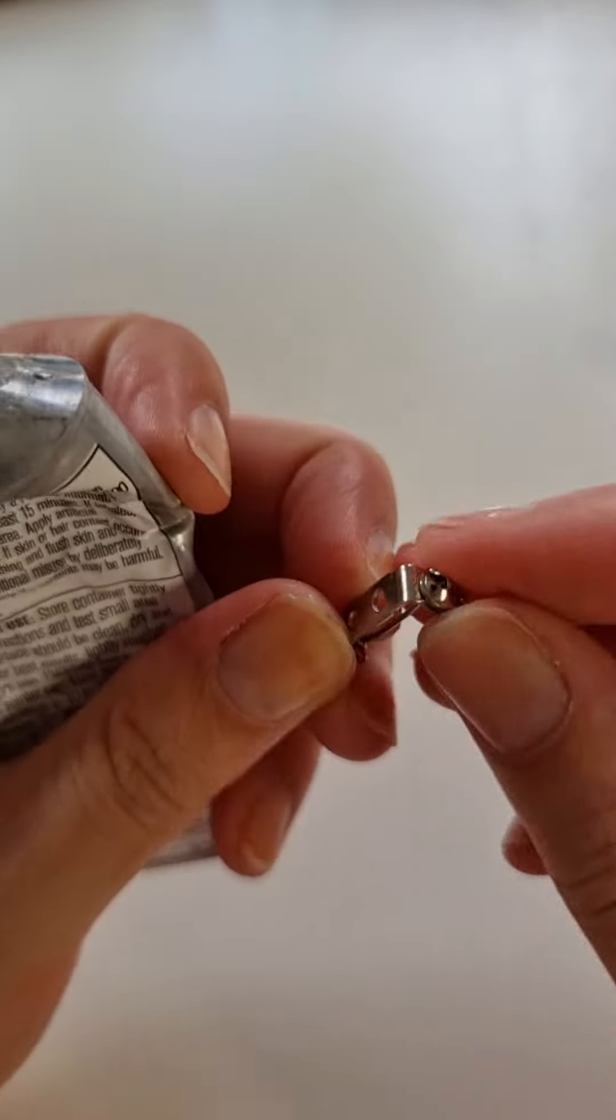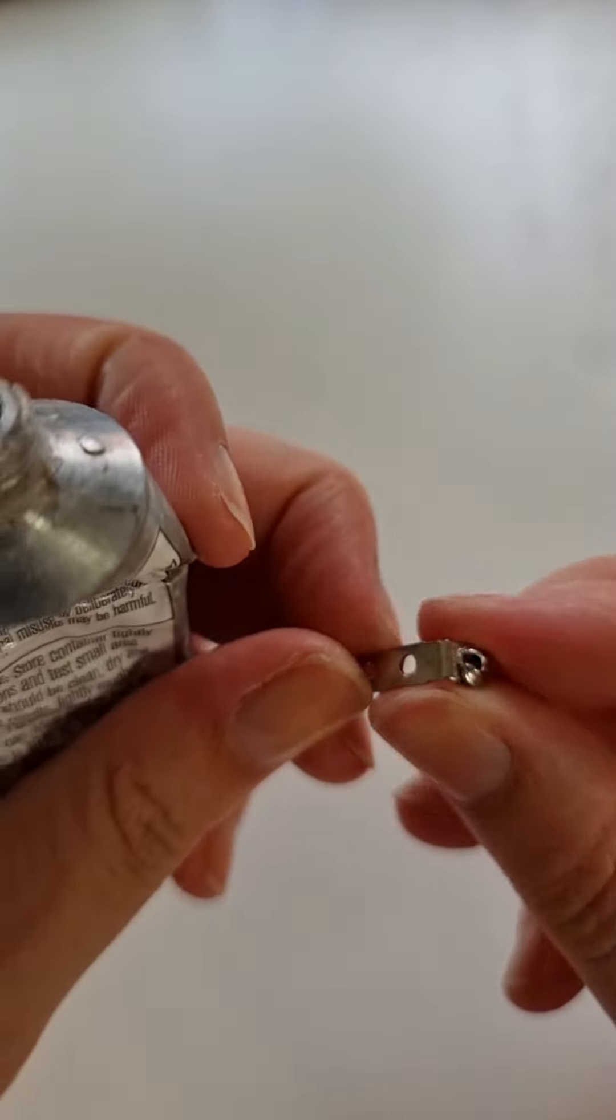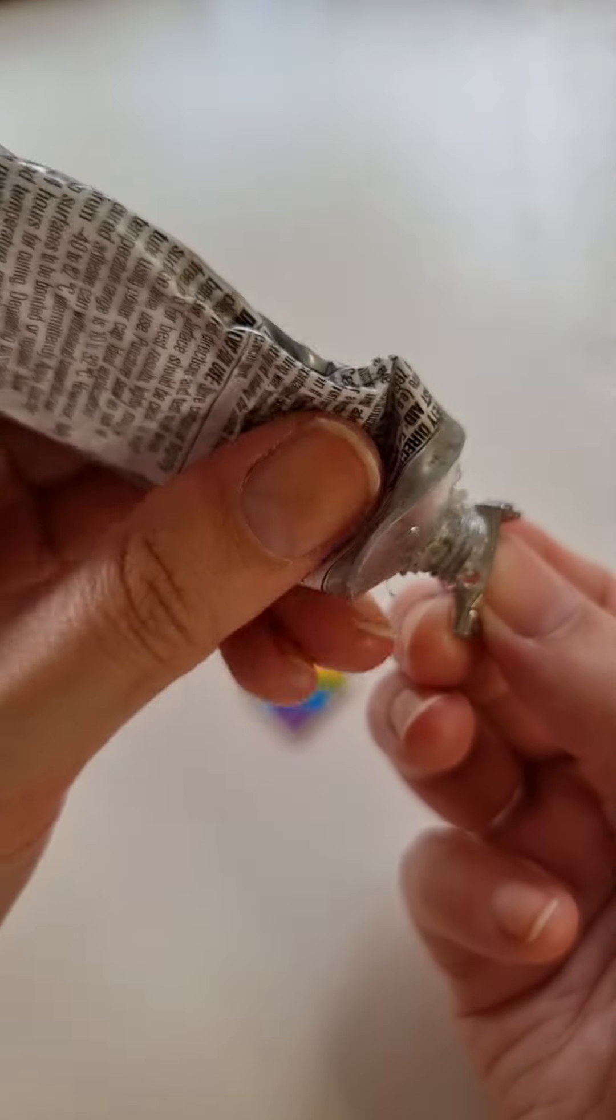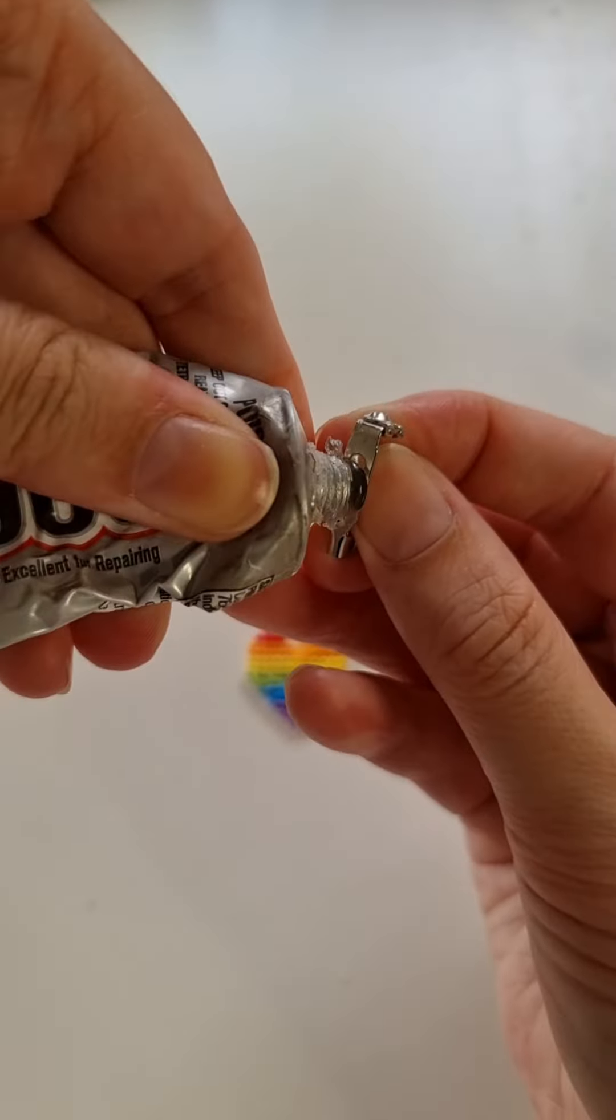The final step of your project is to glue on your badge backing. Make sure your badge is up the right way and then put your glue onto the metal or directly onto your badge.